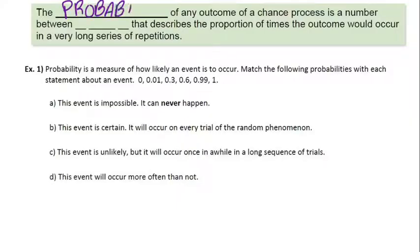The definition here in the green box, that's the definition of probability. The probability of any outcome of a chance process is a number between 0 and 1 that describes the proportion of times that the outcome would occur in a very long series of repetitions. That last part is kind of key here, when we define probability.